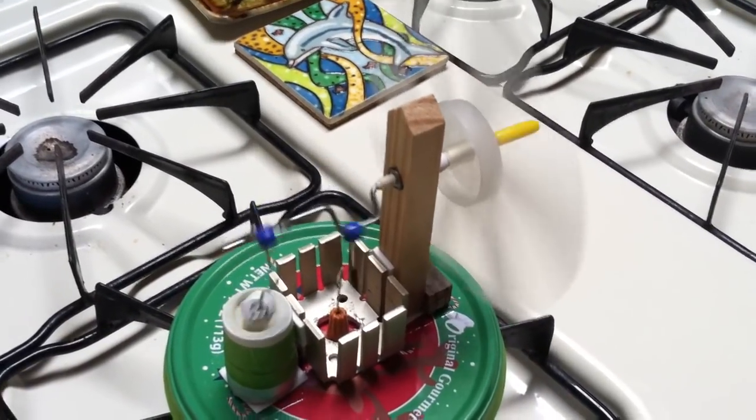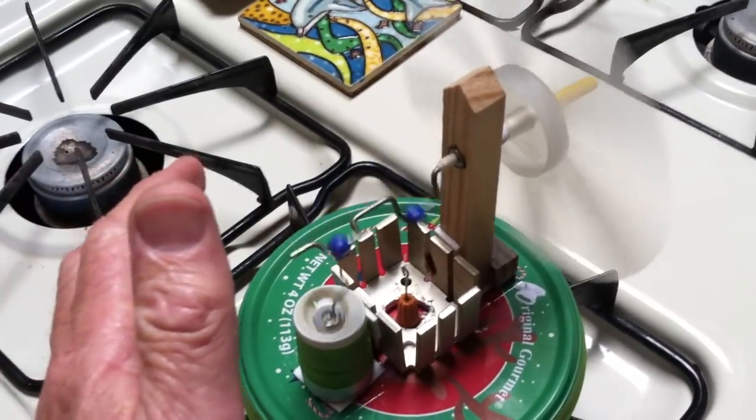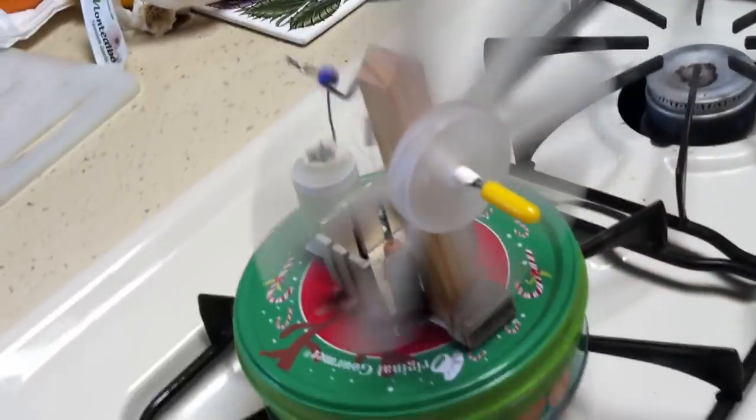Anyway I just took that CD off and I had a plastic fan. They use these on wood burning stoves. You can buy these Stirling engines that have a fan on them.